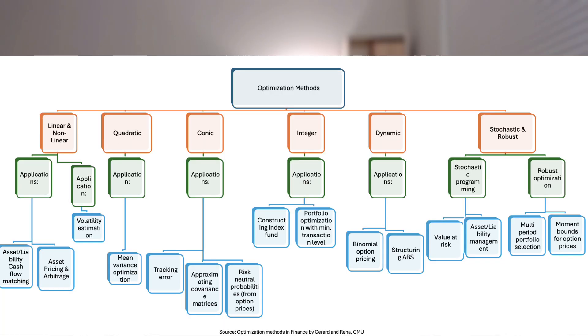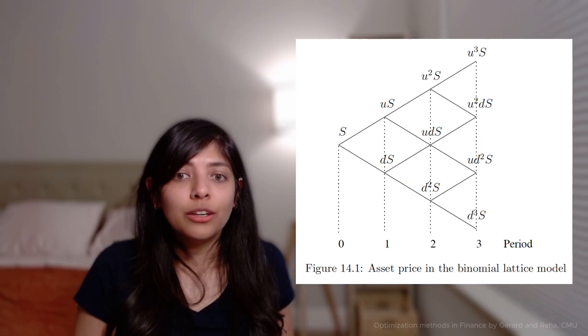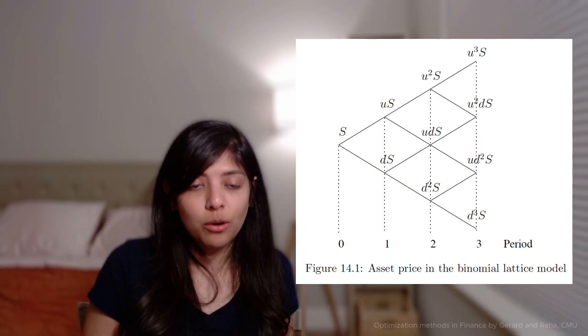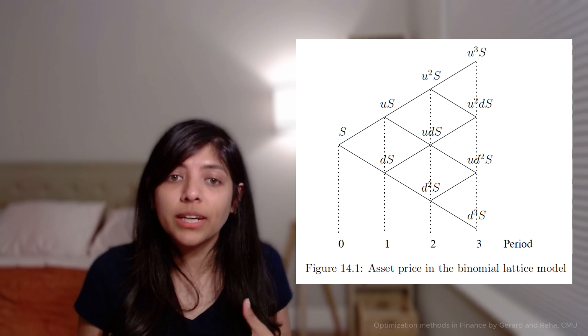Dynamic programming: decide, observe, and repeat. Many problems unfold step by step, and at each step the best choice depends on what you'll be allowed to do later. Dynamic programming tackles these time-linked decisions by working backward from the final step. A textbook example is American option pricing — at every node in the lattice, you decide whether to exercise now or wait, using the already-calculated value of waiting one more step.